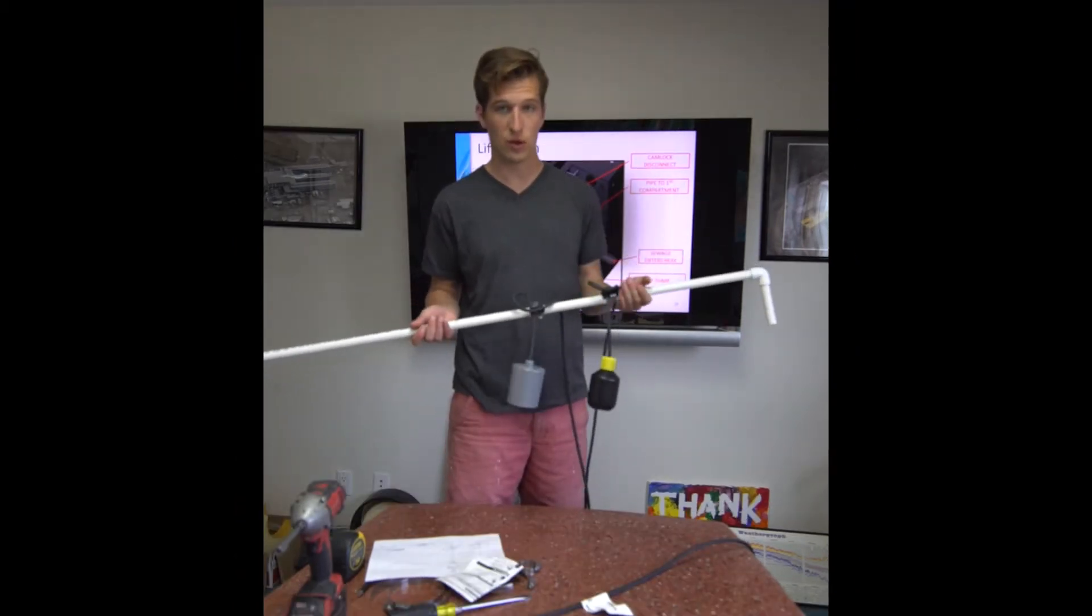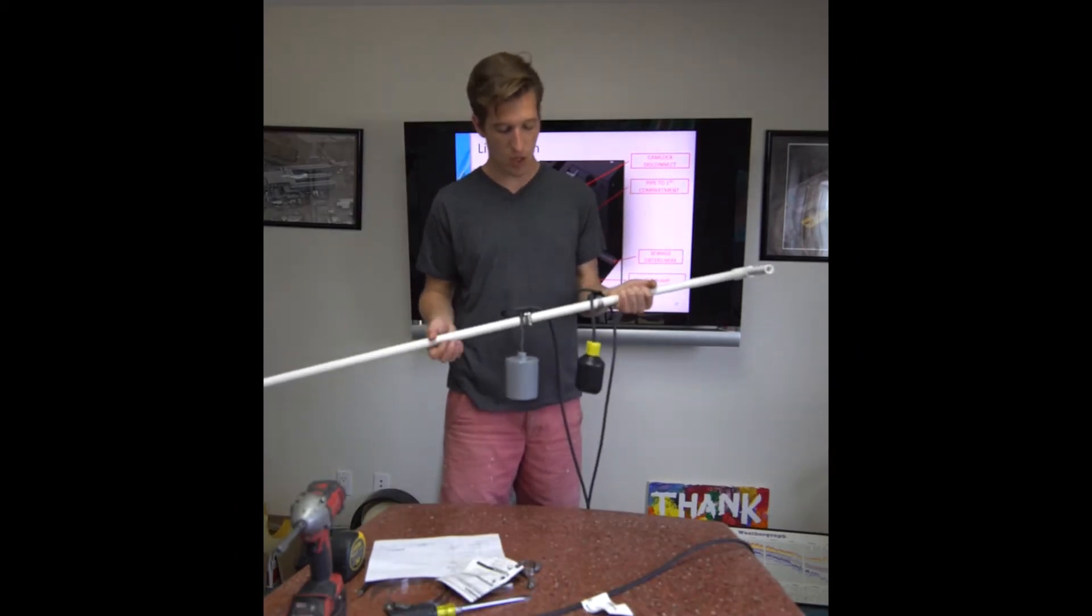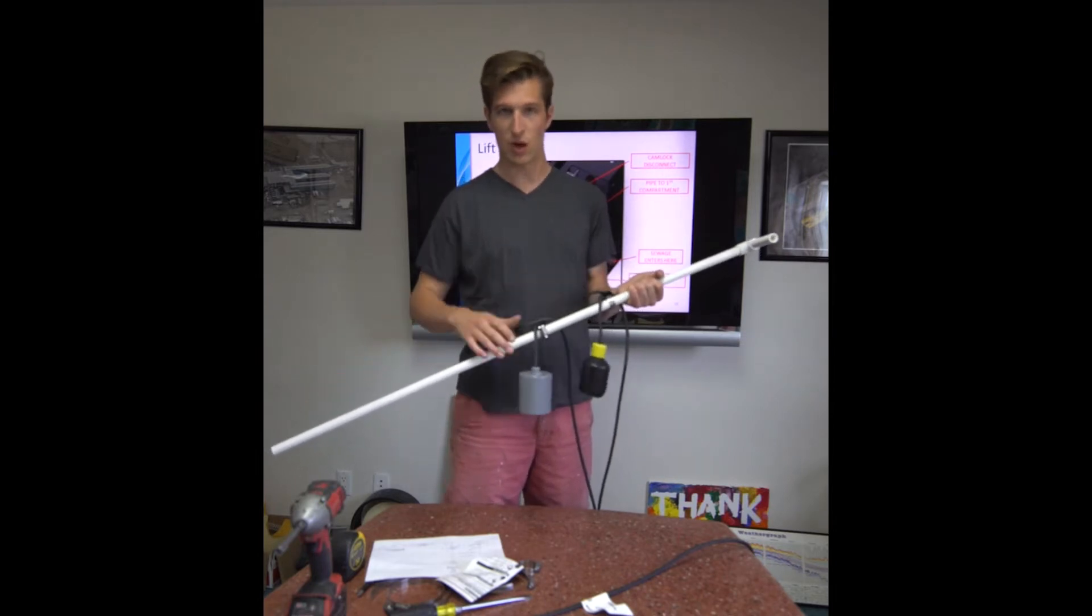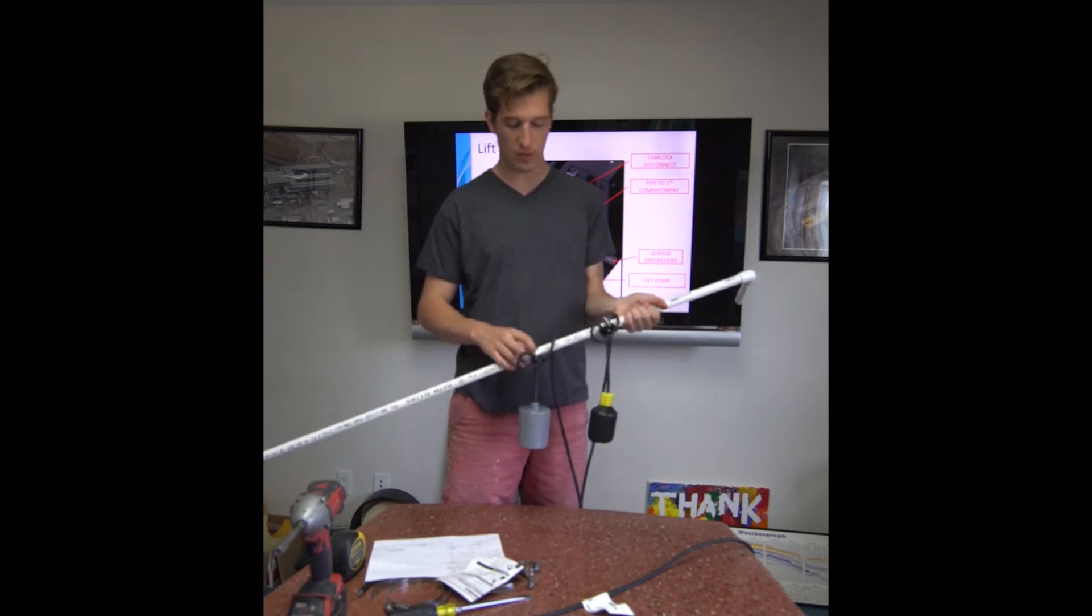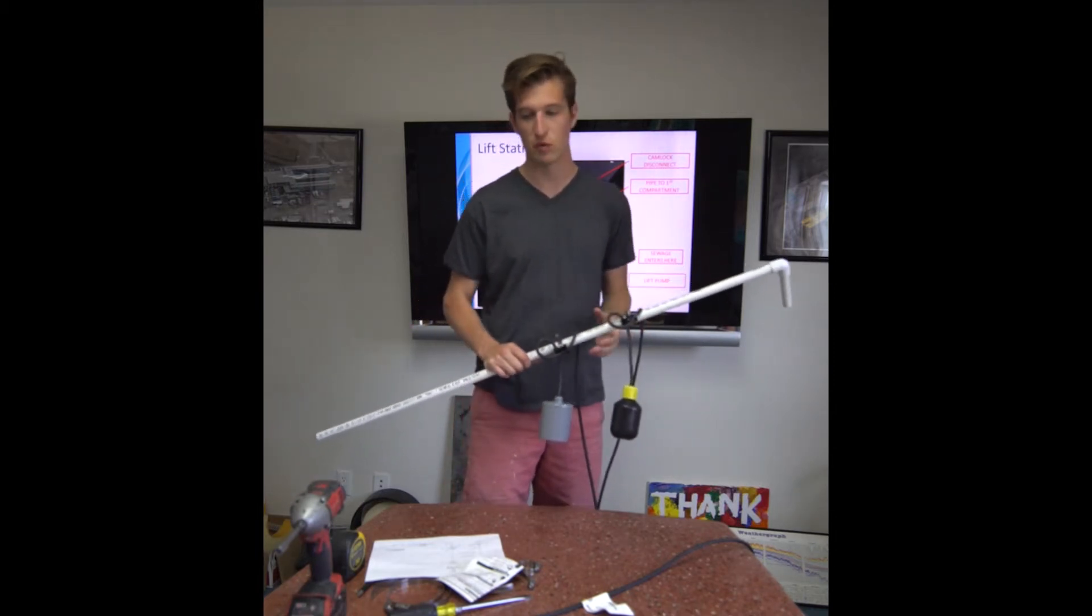So this is what the float tree is going to look like when it comes out of the system. These may be anywhere on the float tree. First thing we want to do is remove these hose clamps so that these floats can be removed from the system.